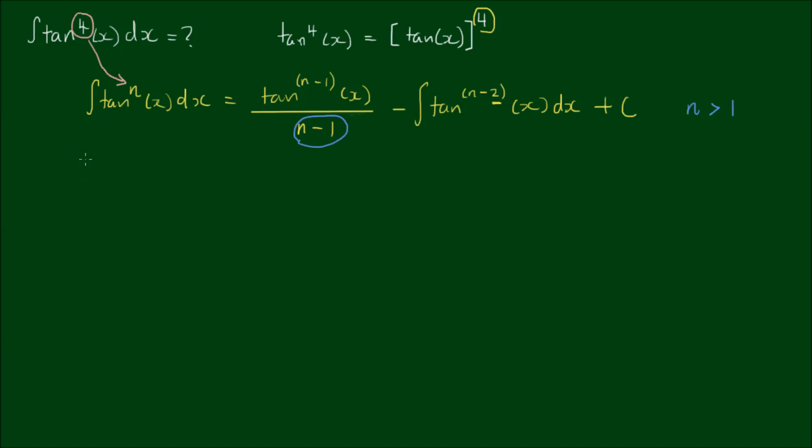Okay, so with that let's apply the reduction formula. So we have the integral of tan to the fourth power is equal to tan to the n minus 1, which is tan cubed of x all over 3 minus the integral of tan squared of x dx plus c.